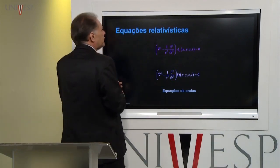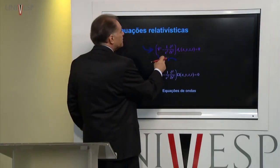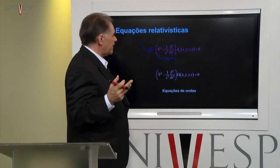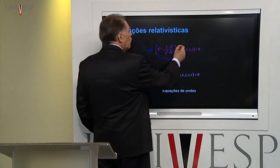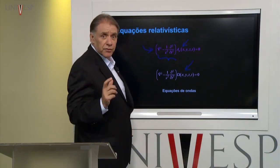Agora, existem equações relativísticas. Uma equação relativística para o campo eletromagnético — não o campo em si, mas para os potenciais eletromagnéticos — é tal que, quando se faz uma transformada de Lorentz, obtém-se essa equação com a mesma forma. Se o campo for o campo do Higgs, que é um escalar, por exemplo, ele satisfaz a esta equação. São equações relativísticas, como dizemos.